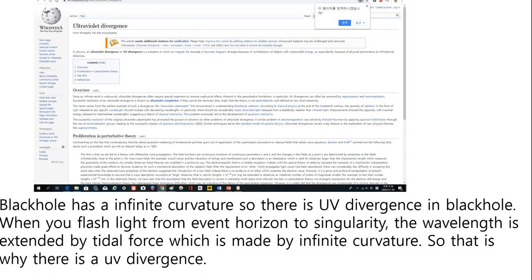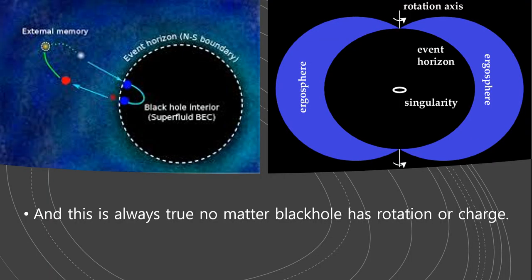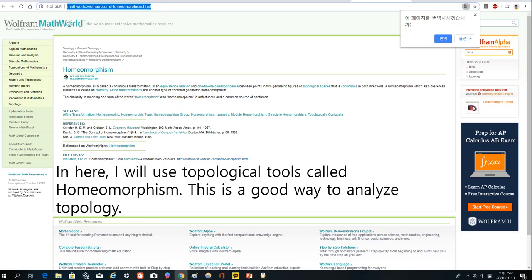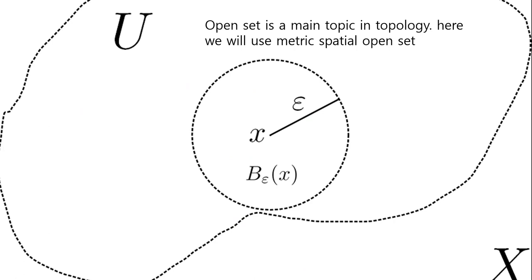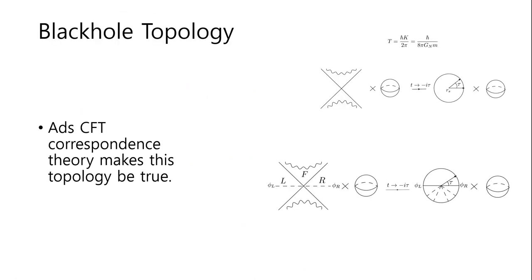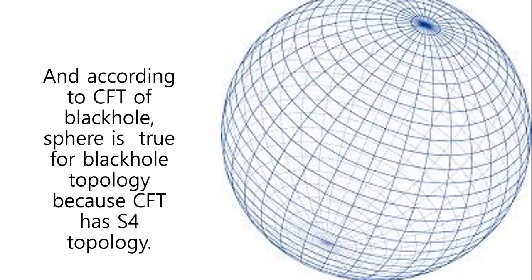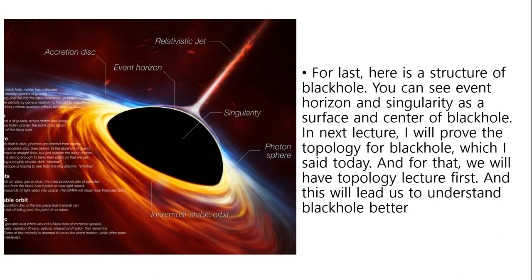Black hole has an infinite curvature, so there is UV divergence in a black hole. When you flash light from the event horizon to the singularity, the wavelength is extended by tidal force made by infinite curvature, so that is why there is UV divergence. This is always true no matter whether the black hole has rotation or charge. I will use a topological tool called homeomorphism, which is a good way to analyze topology. Open set is a main topic in topology, and here we will use matrix spatial open set. ADS-CFT correspondence theory makes this topology true, and according to CFT of black hole, sphere is true for black hole topology because CFT has S4 topology.